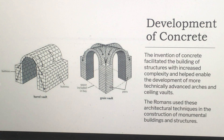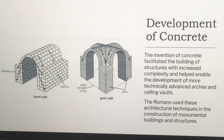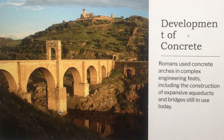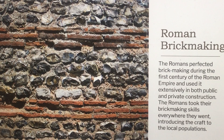Scientists in the modern era are studying Roman concrete to see if they can replicate its properties, since structures made of it are still standing more than 2,000 years later. Concrete facilitated the building of structures with increased complexity and enabled more advanced arches and ceiling vaults. Here we can see a barrel vault on the left and a groin vault on the right, which has four openings. Romans also used concrete in the construction of expansive aqueducts and bridges literally still in use today.